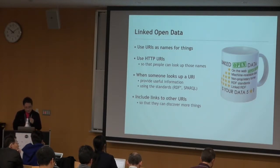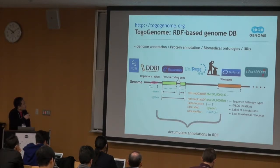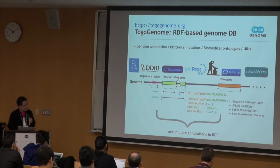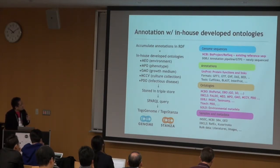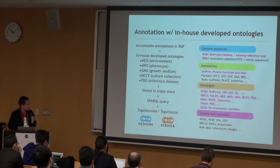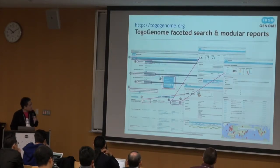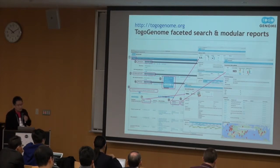We are using this technology for genome information integration. This is one of the applications we have developed at DBCLS. We are accumulating genome annotation, protein annotation, and biomedical ontologies — some are in-house developed and some are gathered from public databases. We accumulate annotations in RDF and are also developing in-house ontologies to describe environment, phenotypes, diseases, and cultural collections, storing all of these into our own triple stores and making SPARQL queries to build an application like TogoGen. This is a brief overview of the user interface of the TogoGen application.